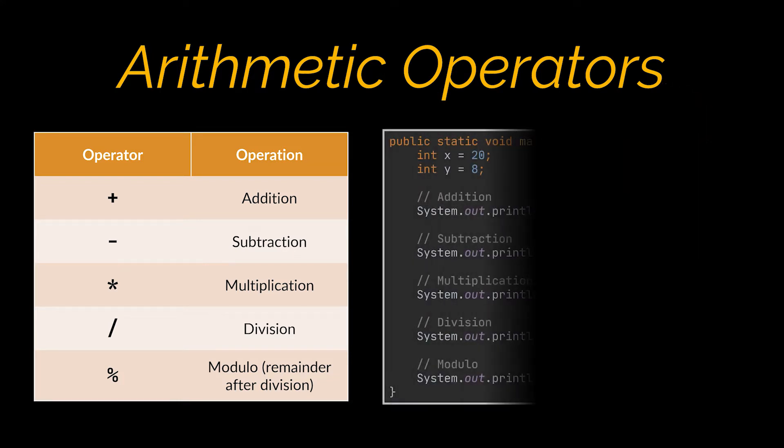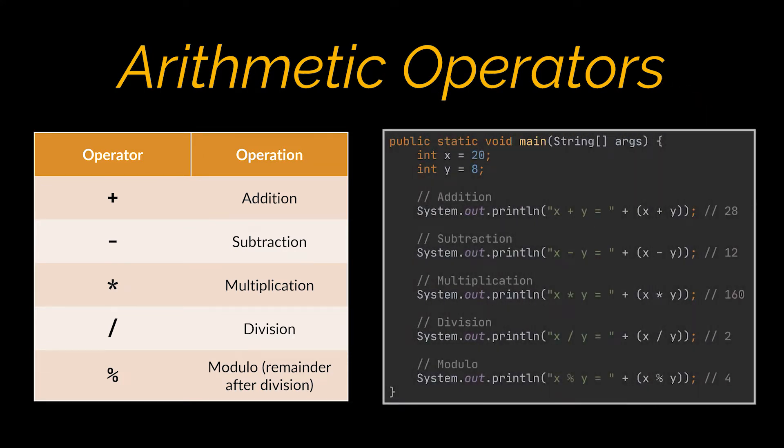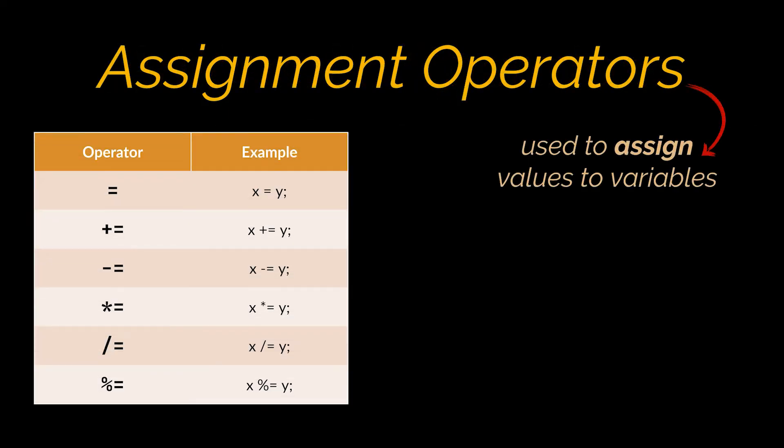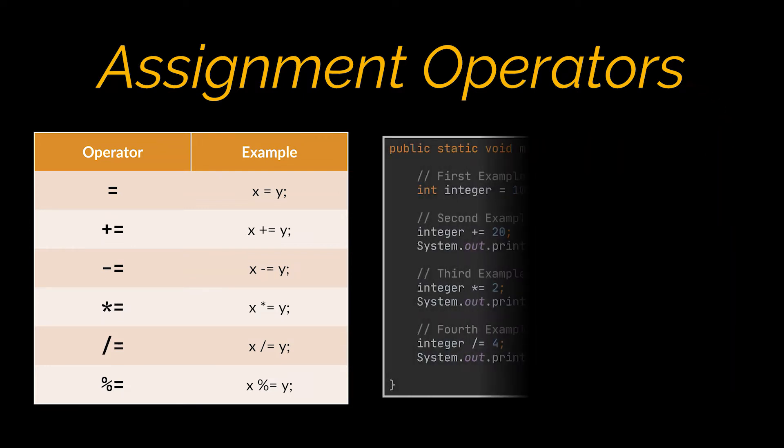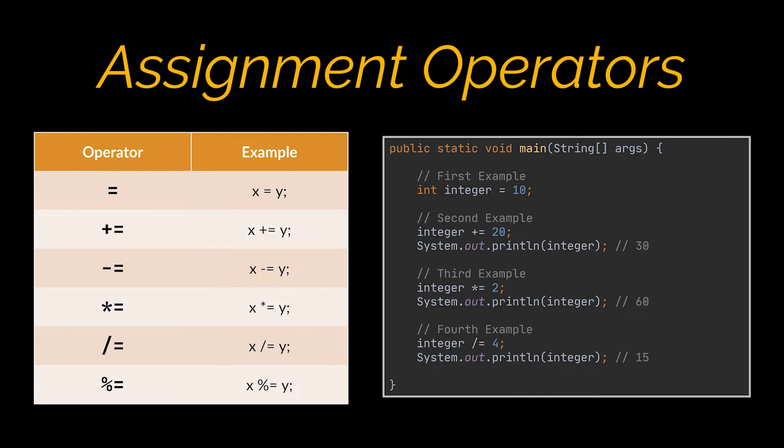Java's assignment operators, as you may have guessed, are used to assign values to variables. In the first example we are assigning the value 10 to the variable integer and in the second example we are assigning the sum of integer and 20 to the same integer variable.